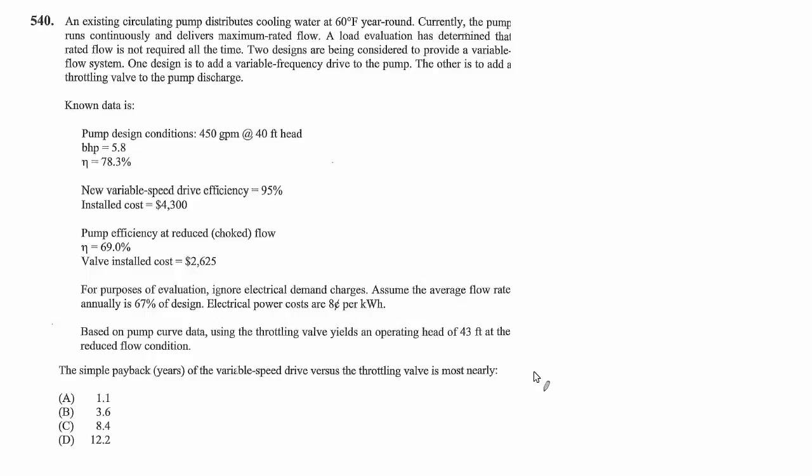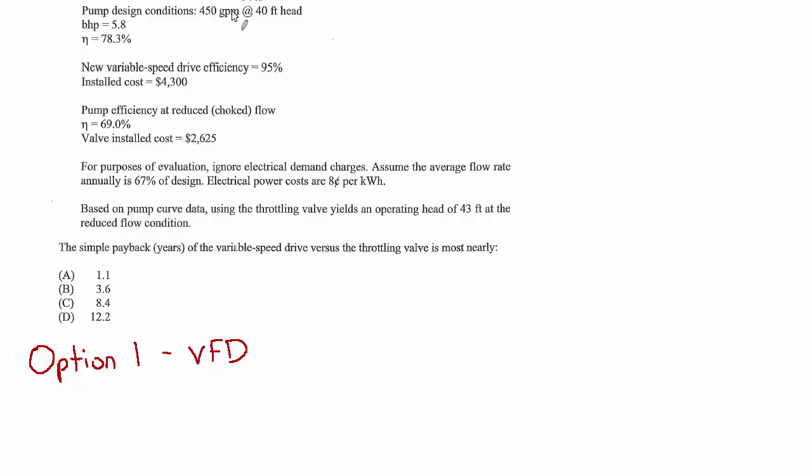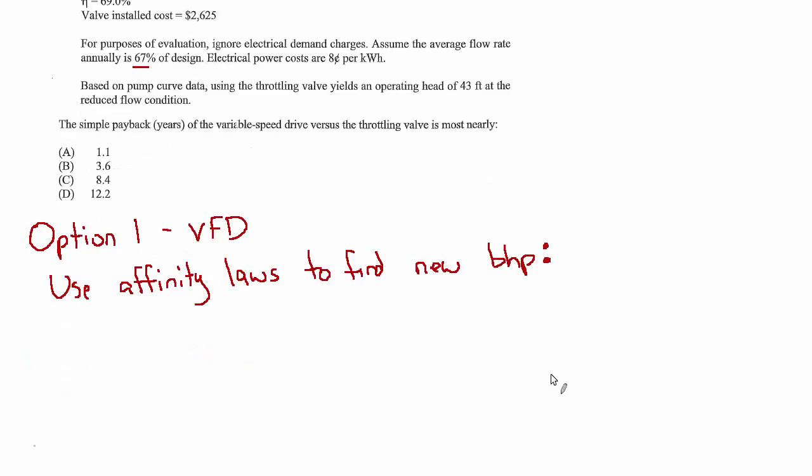Let's start with option one for the VFD. Since we know the flow rate design is 450 and it's going at full flow, we only need to run at 67% of that. And at full flow, the brake horsepower is 5.8. So we can use the affinity laws to find the new brake horsepower. The power changes with the cube of the flow rate or the speed. So we can say BHP2, or the new BHP, as compared to BHP1, will be Q2 over Q1 cubed.